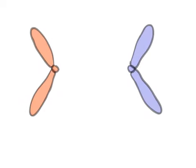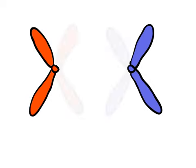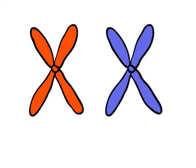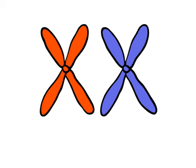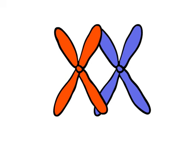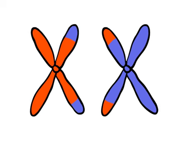To form sperm or egg cells, your chromosomes double. When the homologous pairs separate, sometimes they cross over, and at seemingly random points, exchange DNA. This is called genetic recombination.